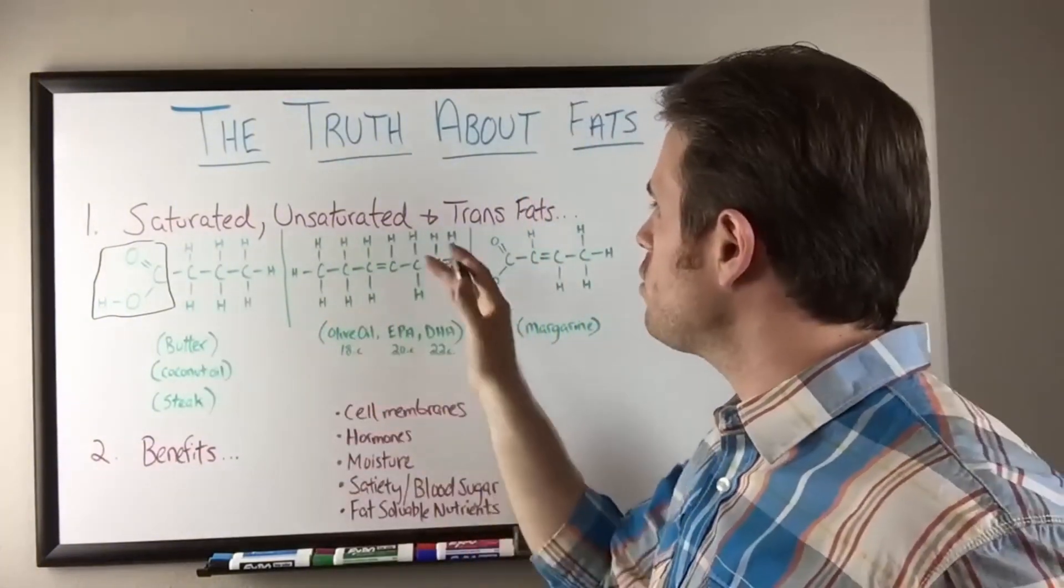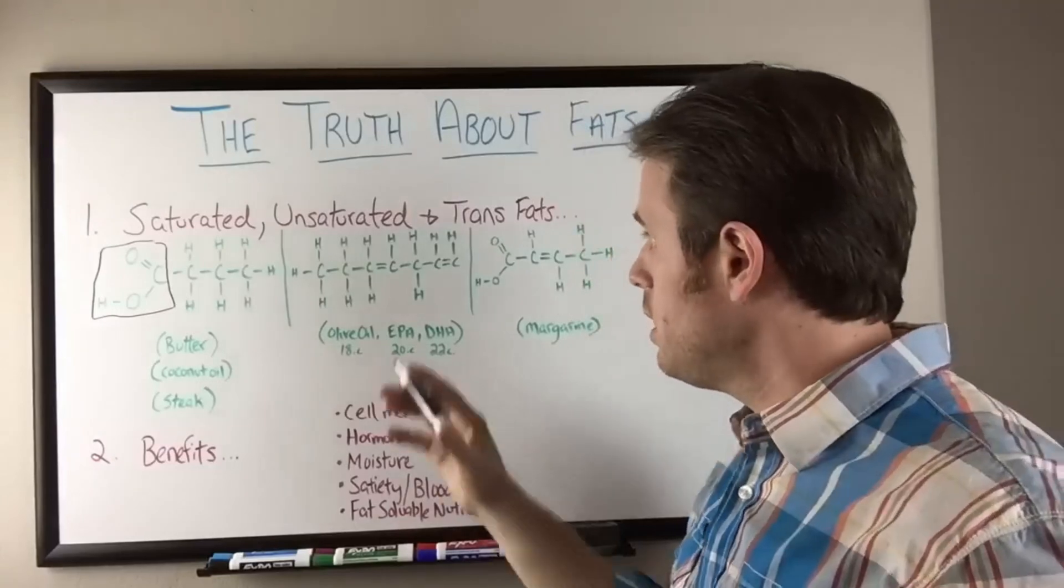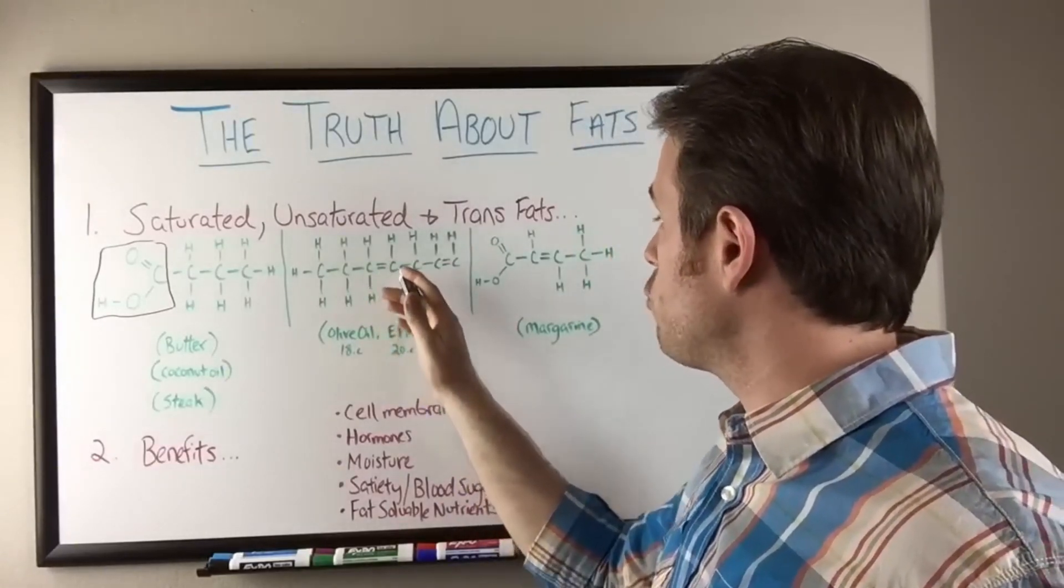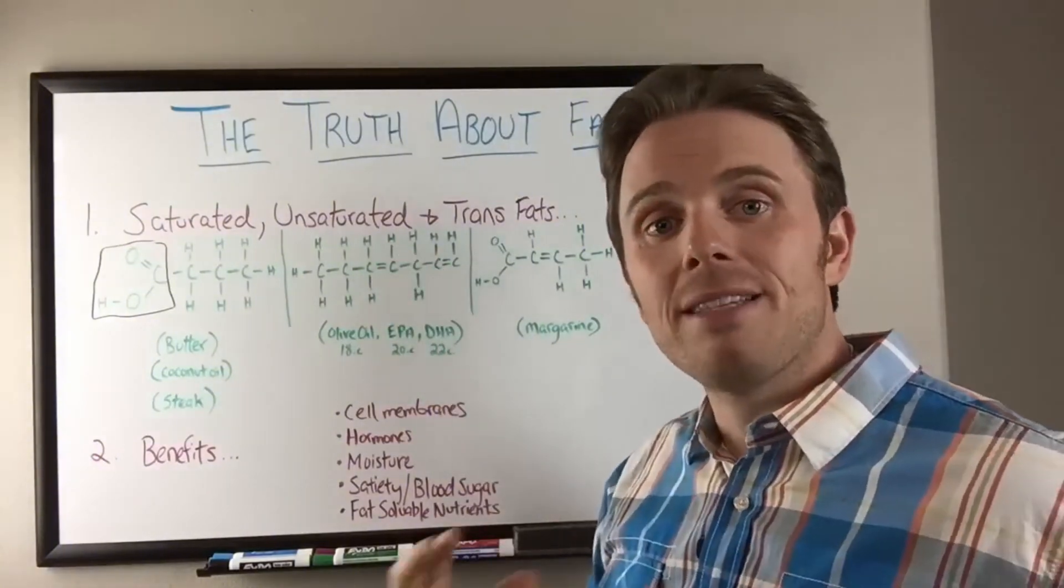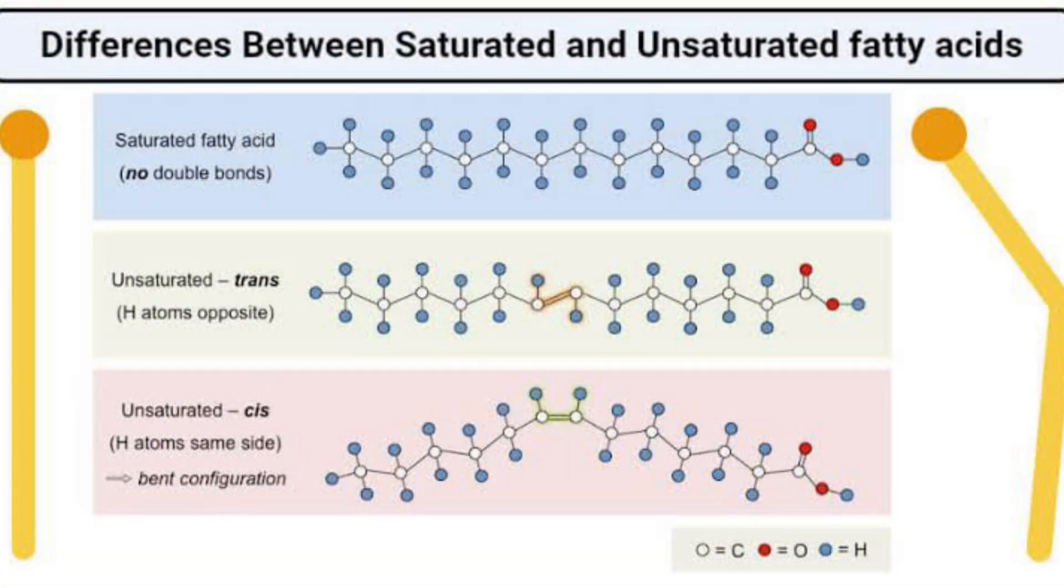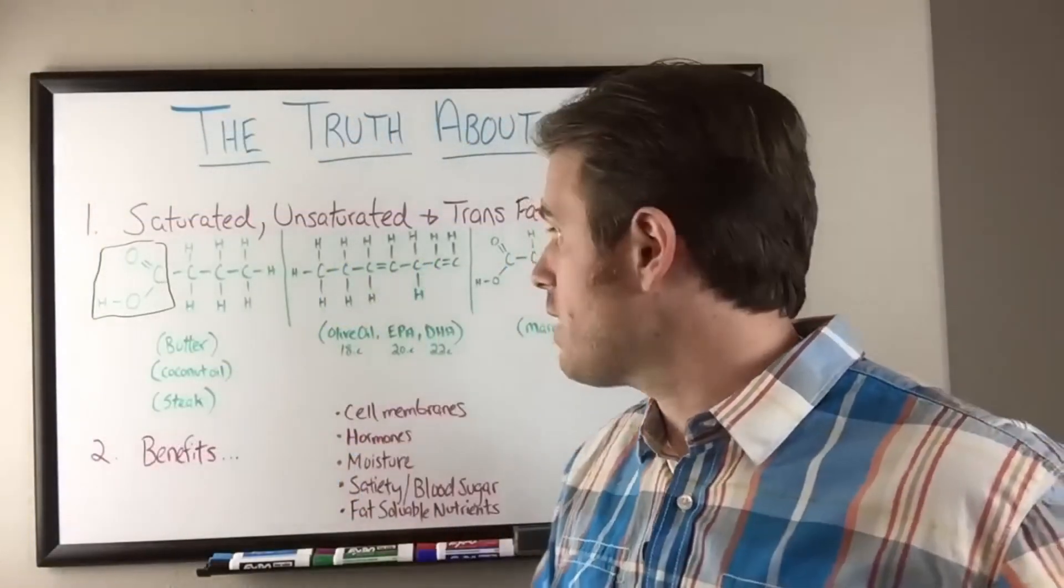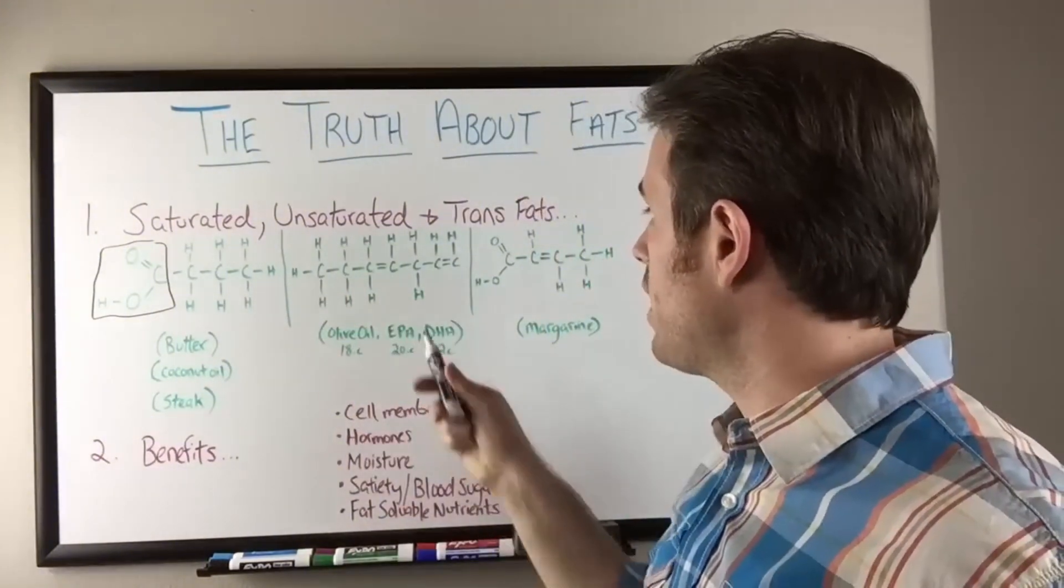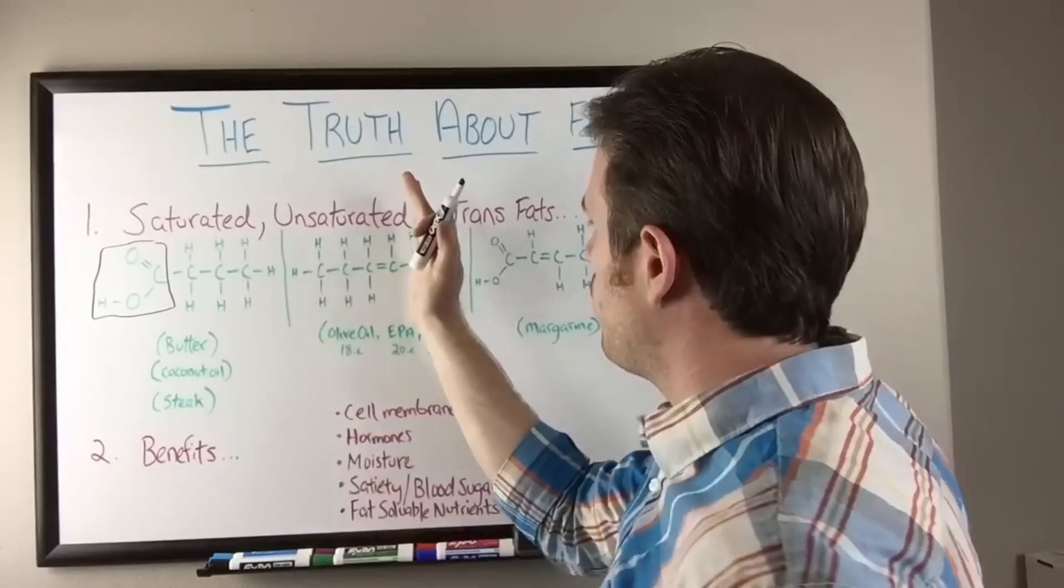If we go to our unsaturated fats, what makes them unsaturated is the fact that they have a double bond, which there's one hydrogen there missing because of that double bond. That's what makes it an unsaturated. Now a monounsaturated, that's essentially olive oil. That means it just only has one double bond that's not saturated. So that's monounsaturated fat. If we're looking at it from here over, this is a monounsaturated, this is olive oil.